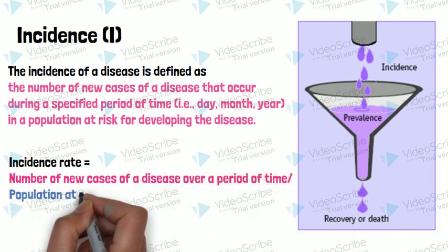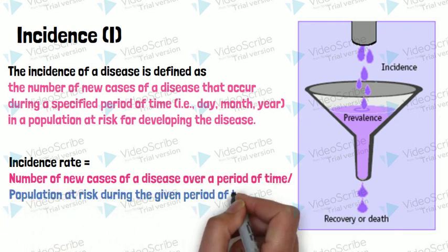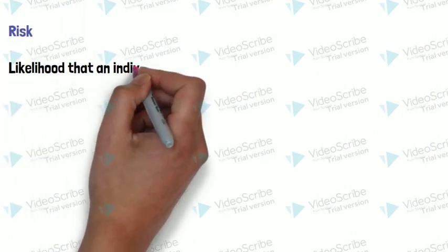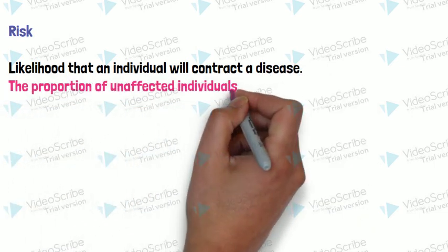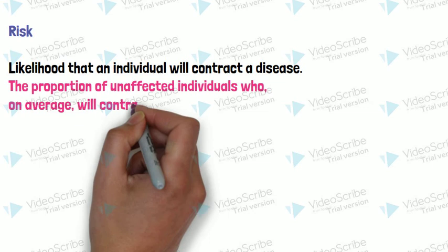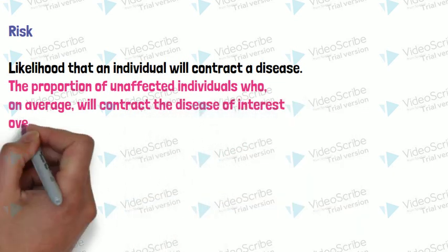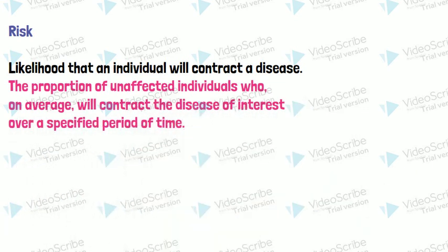Risk is the likelihood that an individual will contract the disease, the proportion of unaffected individuals who will contract the disease of interest over a specified period of time. Since incidence is a measure of new events—that means a transition from the non-disease state to disease state—incidence measures risk.